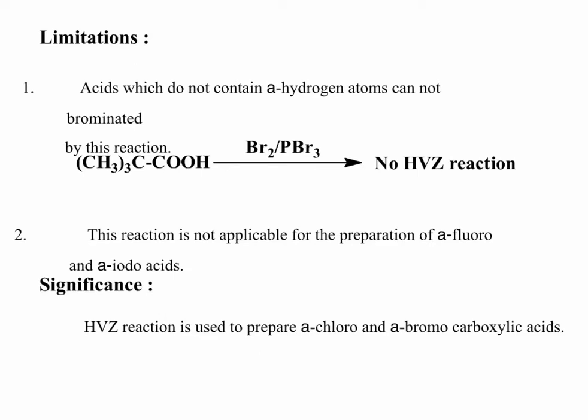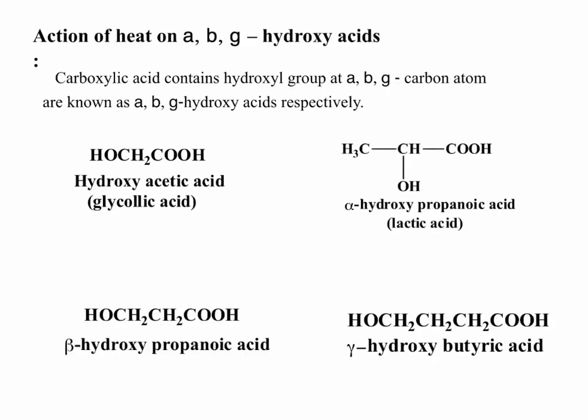Next, action of heat on α, β, γ-hydroxy acids. A carboxylic acid containing a hydroxy group at the α, β, or γ-carbon atoms is known as an α, β, or γ-hydroxy acid respectively. Here are examples of α, β, and γ-hydroxy acids.